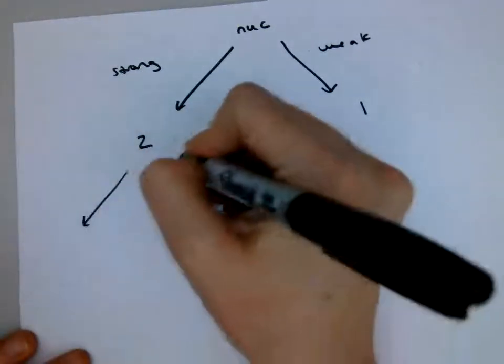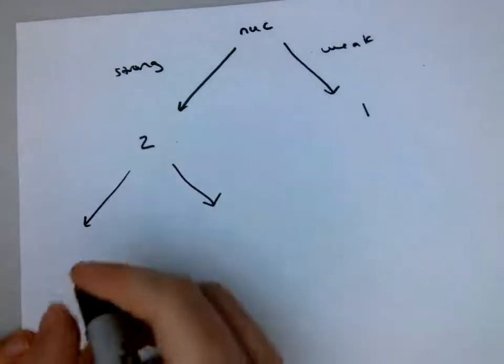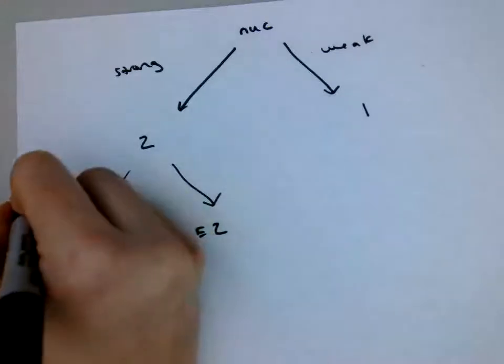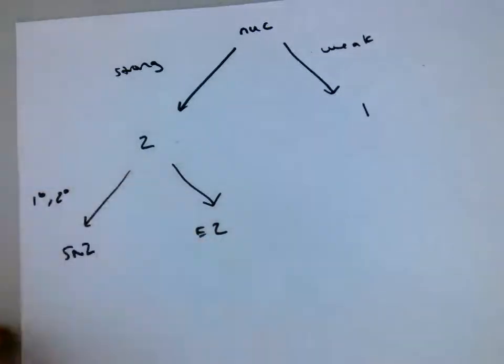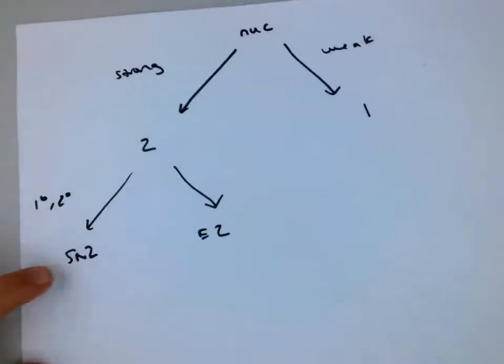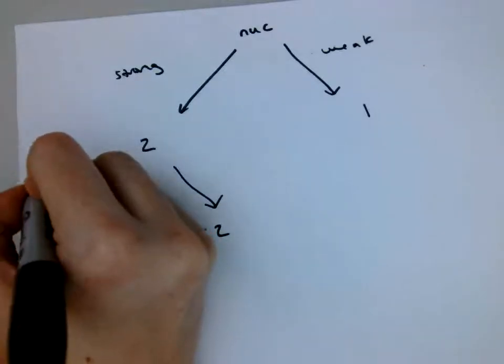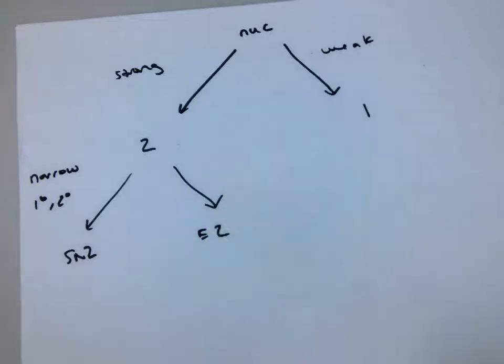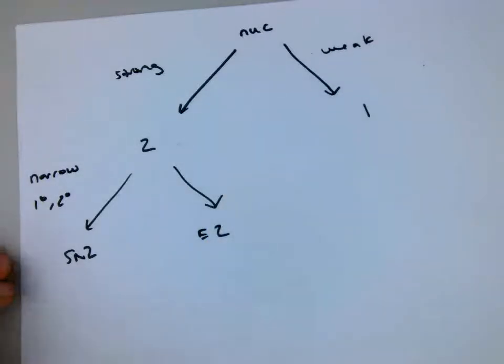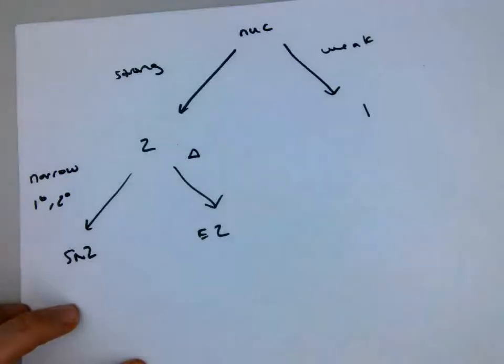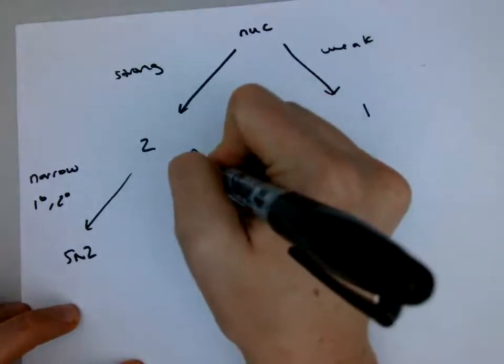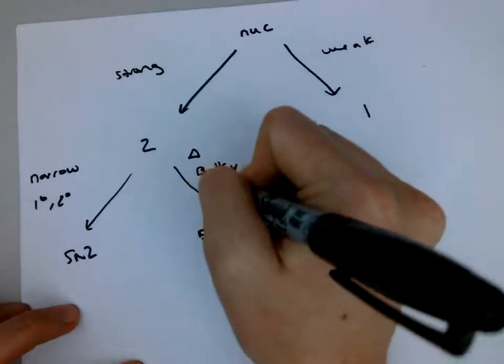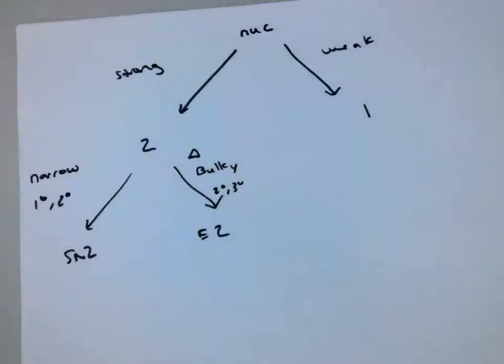So now if we have a 2, you need to try to figure out what's going to make it go E2 and what's going to make it go SN2, right? Well, I can tell you. If it's primary or secondary, because it needs that backside attack, it's going to favor SN2. Also, if it's narrow, like if it's a thin line versus a big bulky group, it'll favor SN2. If there's heat, so I'm going to denote that with a triangle. If it's a big bulky group, like a tert-butoxide, it's going to go E2. And if it's secondary or tertiary with a strong nucleophile, it's going to go E2.